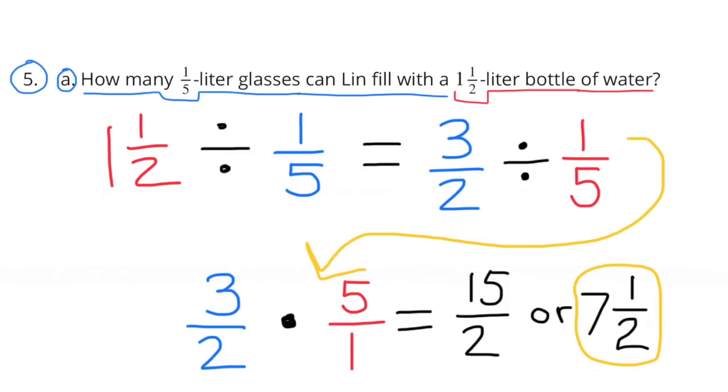Problem 5, Part A: How many one-fifth liter glasses can Linn fill with a one-and-a-half liter bottle of water? One-and-a-half divided by one-fifth equals three-halves divided by one-fifth. We need to multiply three-halves times the reciprocal of one-fifth, which is five over one. So three-halves times five over one equals five-halves or seven-and-a-half. Linn can fill seven-and-a-half one-fifth liter glasses.